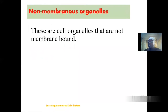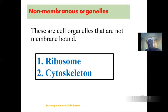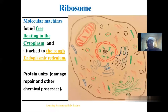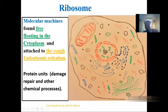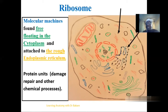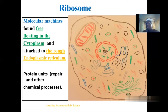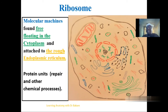Moving to the non-membranous organelles — these organelles are not membrane-bound, so they are seen floating naked within the cytoplasm. We have two: the ribosome and the cytoskeleton. The ribosome are molecular machines seen floating freely in the cytoplasm and also on the surface of the rough endoplasmic reticulum. The production of protein is needed within the cell to repair damaged areas and they are also involved in different cellular processes, including endocytosis, exocytosis, and cell adhesion.